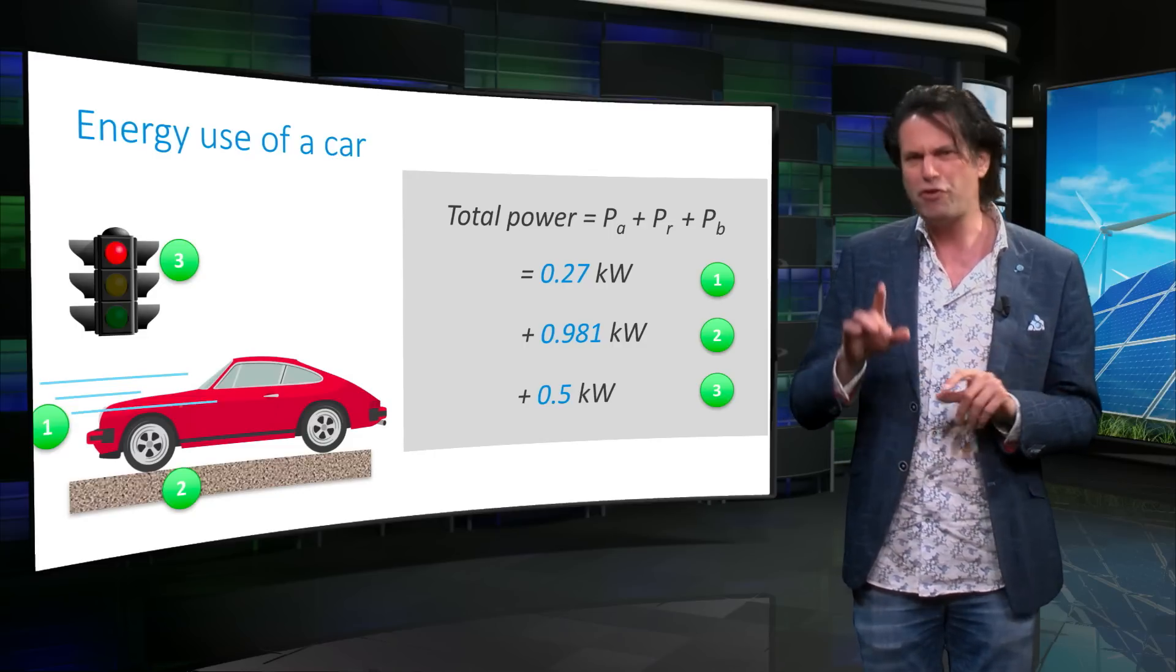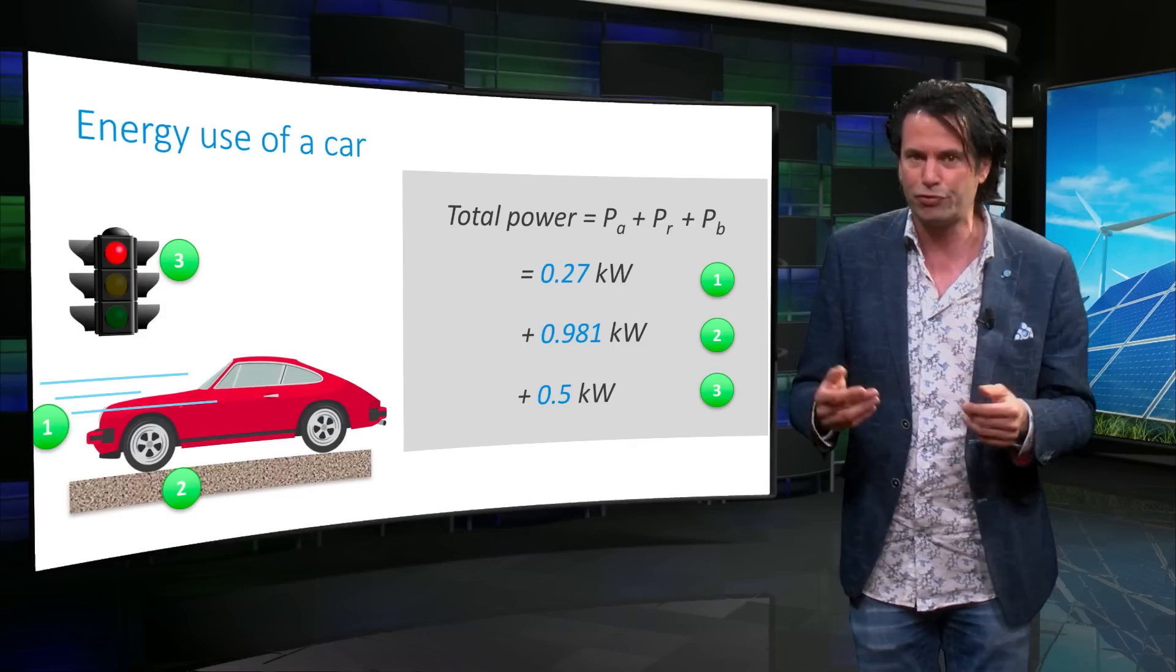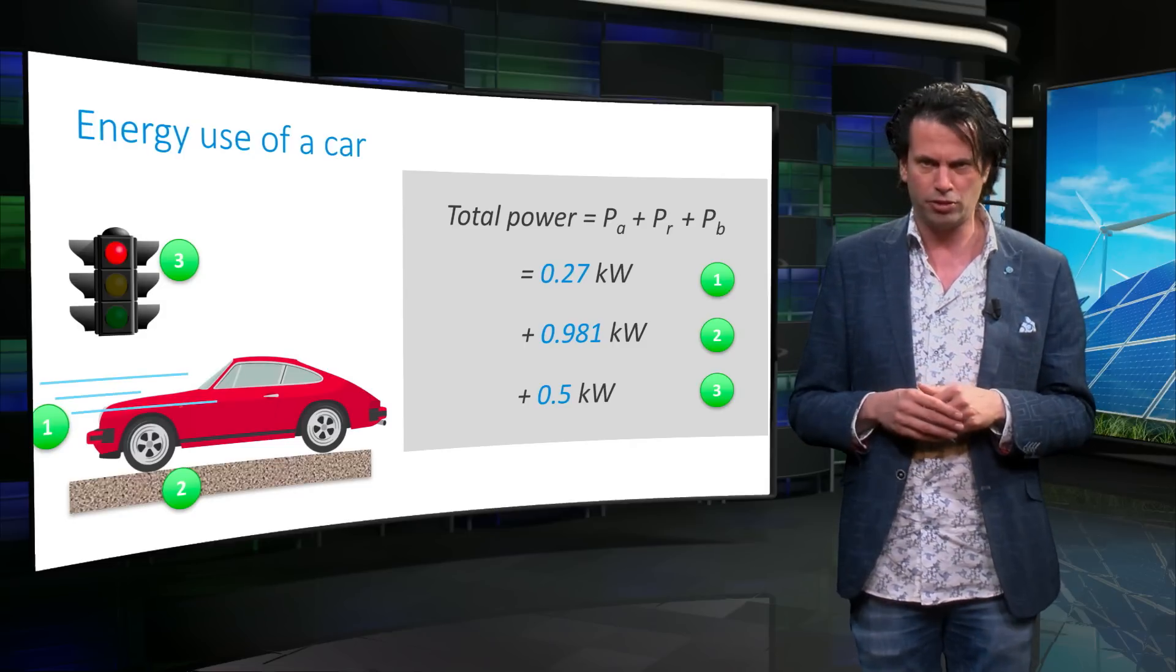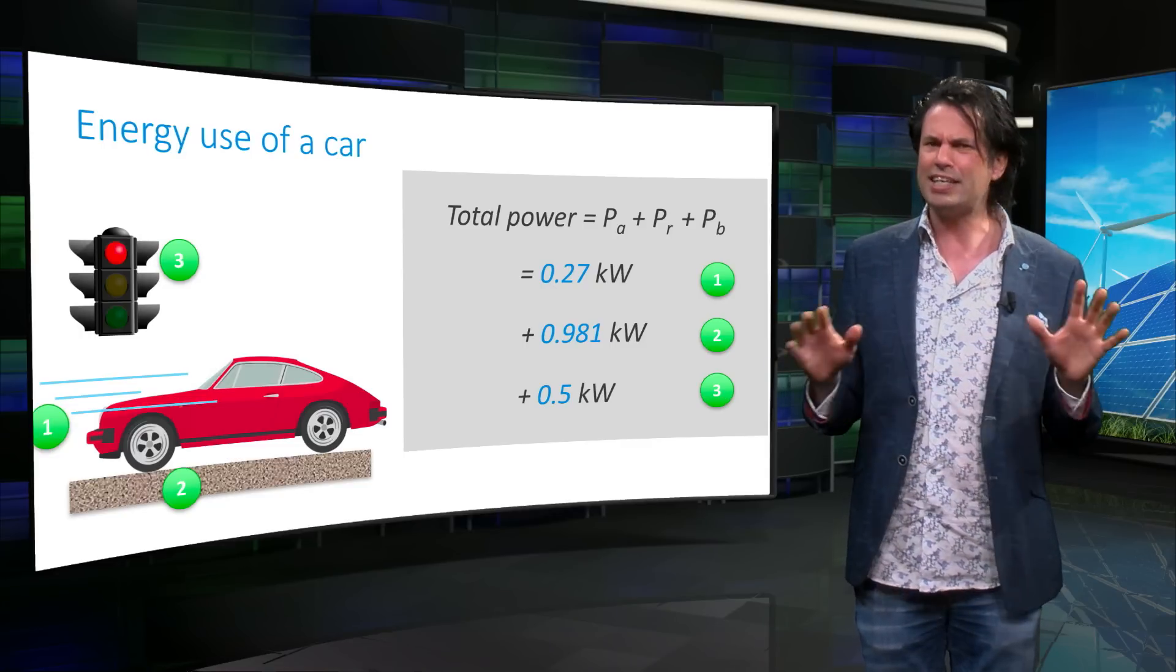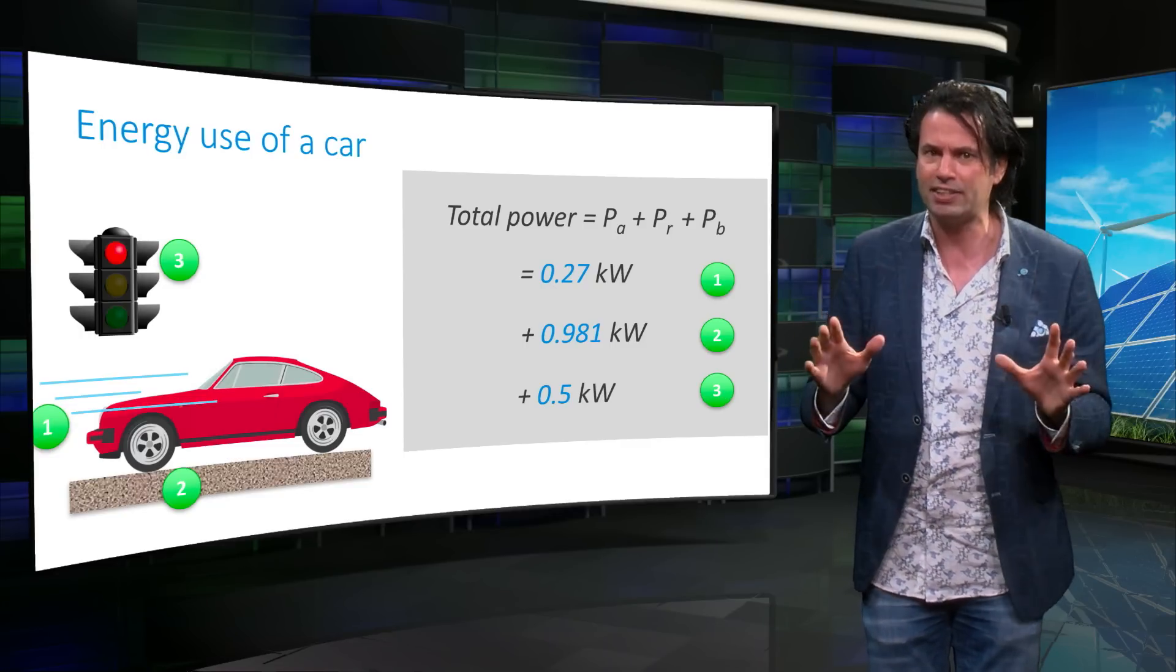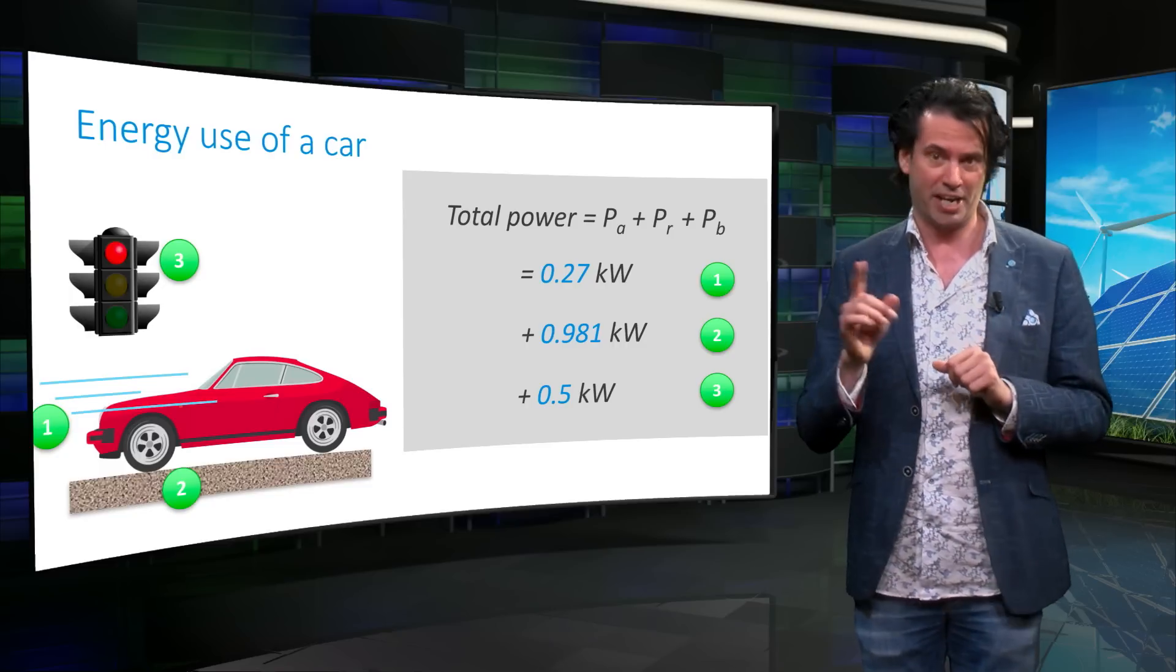Thus, if you drive slower, you will lose less fuel to braking and air resistance, but it will take longer for you to reach your destination. Is there a way to travel faster and still reduce braking resistance?